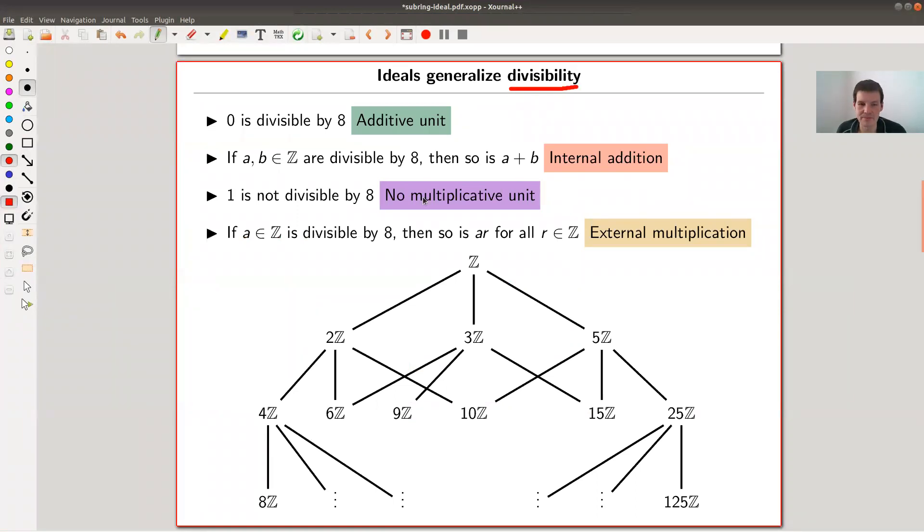Okay, so let me take this idea of quotient a step further by claiming that ideals generalize divisibility. So what is divisibility? Well, let me just look at the divisibility by 8, just because I like 8. So here's 8. This notation just means 8Z are all numbers that are divisible by 8. In other words, it's something like minus 16, minus 8, 0, 8, 16, and so on. And they form an ideal in the following sense.